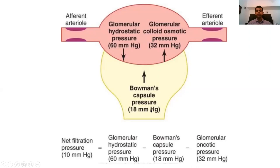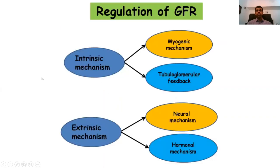From the Bowman's capsule side there is a hydrostatic pressure pushing fluid back into the glomerulus. At the end of the day, there is roughly a net filtration pressure of around 10 mmHg that governs the filtrate. This glomerular filtrate is regulated by many intrinsic and extrinsic mechanisms — the myogenic mechanism and the tubuloglomerular feedback mechanism being the predominant intrinsic mechanisms.